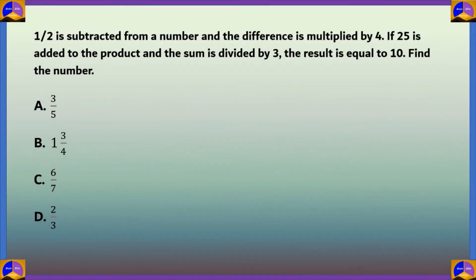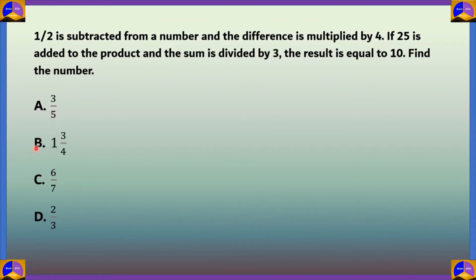Next question: 1/2 is subtracted from a number and the difference is multiplied by 4. If 25 is added to the product and the sum is divided by 3, the result is 10. Find the number. Option A: 3/5, Option B: 1¾, Option C: 6/7, Option D: 2/3.